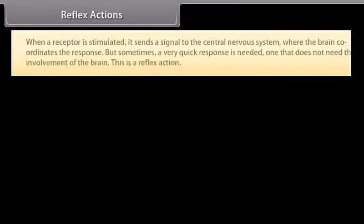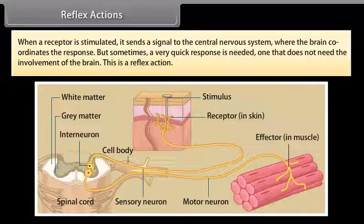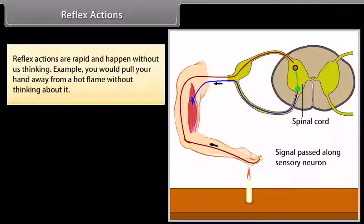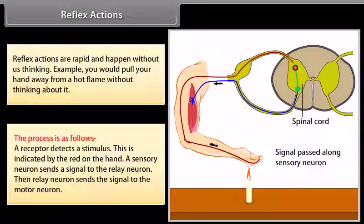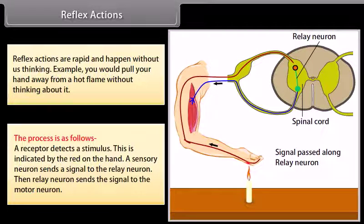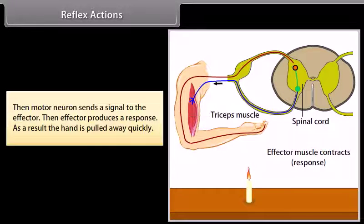When a receptor is stimulated, it sends a signal to the central nervous system where the brain coordinates the response. But sometimes a very quick response is needed — one that does not need the involvement of the brain. This is a reflex action. Reflex actions are rapid and happen without us thinking. For example, you would pull your hand away from a hot flame without thinking about it. A receptor detects the stimulus, a sensory neuron sends a signal to the relay neuron, the relay neuron sends the signal to the motor neuron, the motor neuron sends a signal to the effector, and the effector produces a response — the hand is pulled away quickly.